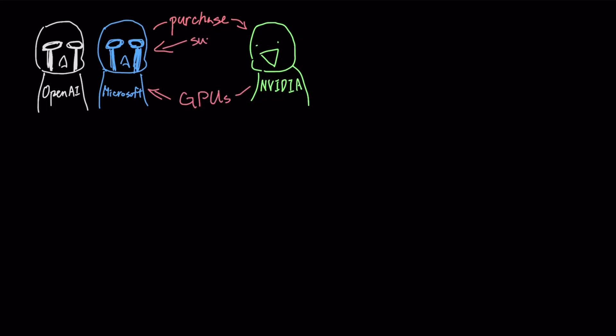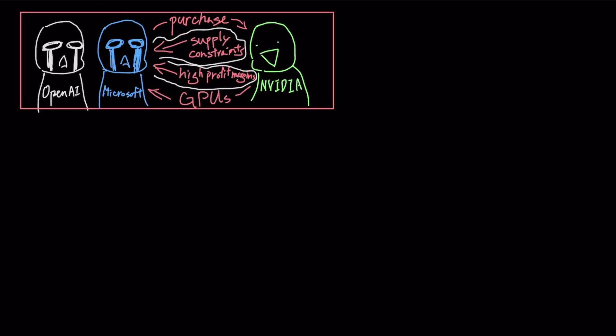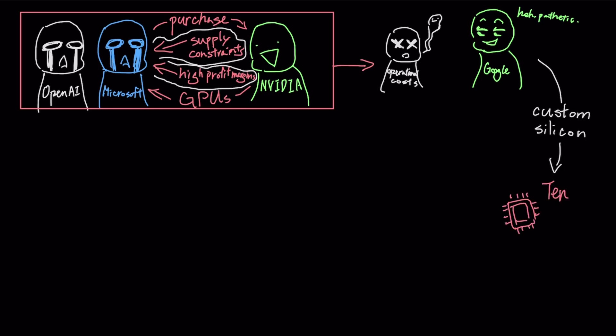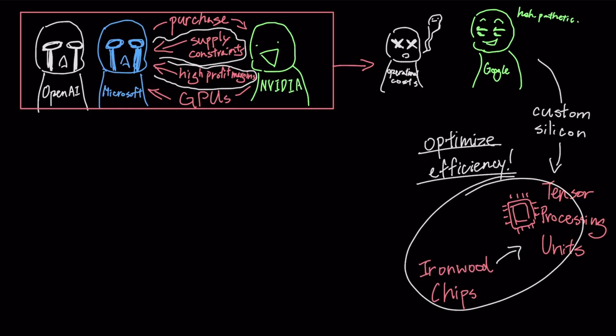Because competitors like OpenAI and Microsoft are forced to purchase their graphics units from NVIDIA, they are subject to significant supply constraints and high profit margins that directly impact their operational costs. Google, however, has spent years developing its own silicon known as Tensor Processing Units. This vertical integration allows them to deploy their new Ironwood chips, specifically optimized to run their models far more efficiently than general-purpose hardware.